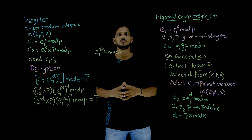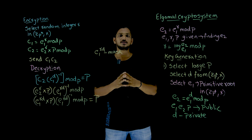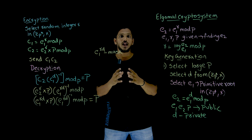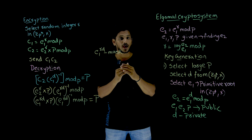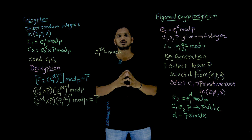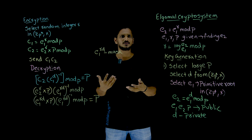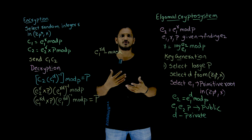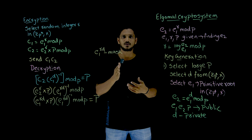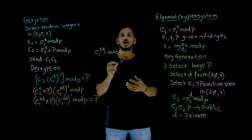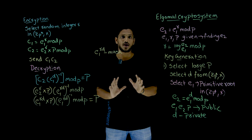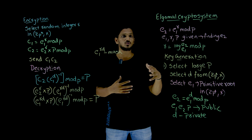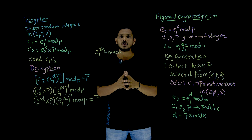Hi, welcome to Learning Monkey. I am Ragu. In this class we'll discuss the ElGamal cryptosystem, which is one of the asymmetric key cryptography systems. In previous classes we already discussed RSA, another asymmetric cryptography system, and some concepts of exponential and logarithms and basic group theory. Please watch those classes and come back here, because we are going to use all those concepts. The link for the playlist is provided in the description below.